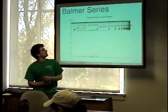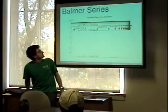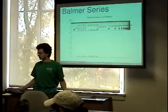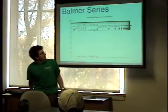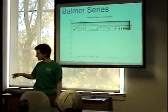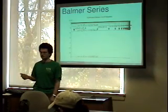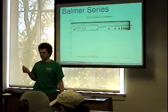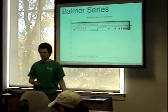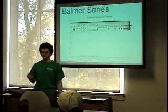The largest wavelength we expect is about 6561 angstroms, corresponding to the transition from n=3 to n=2. The wavelengths keep going down and they limit to some value, which is the wavelength corresponding to a free electron being captured into the second energy level — equivalently, the wavelength of light required to free an electron from the second energy level.